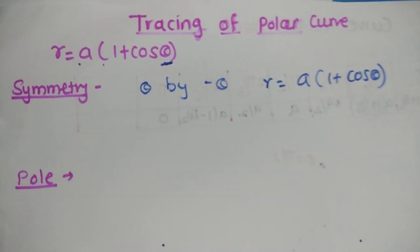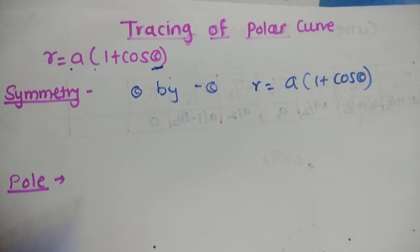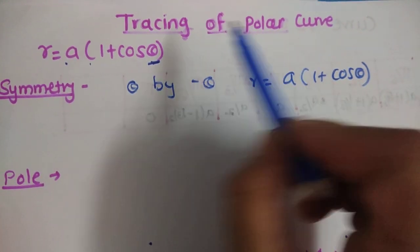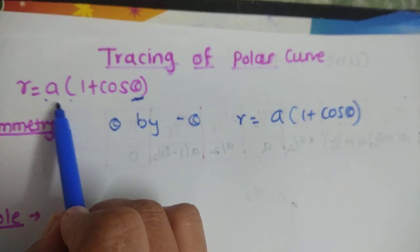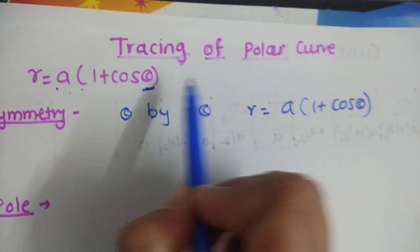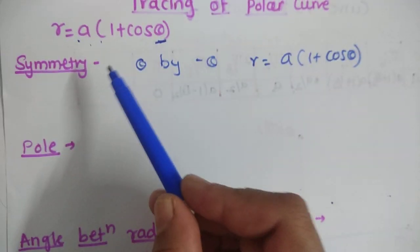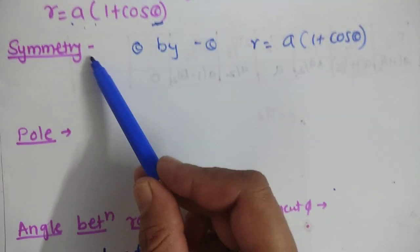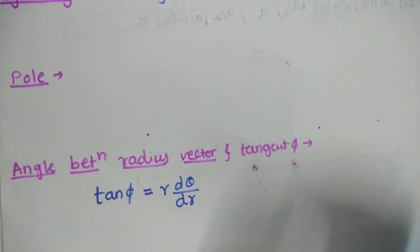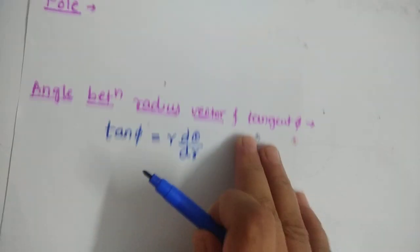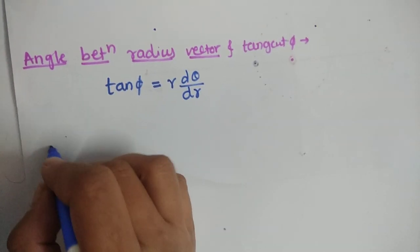Hello friends, today we are going to discuss tracing of polar curves. The first example is r equal to a(1 + cos θ). We will check all the properties one by one: symmetry, pole, angle between radius vector, region of absence or presence, then the table, and then the figure.